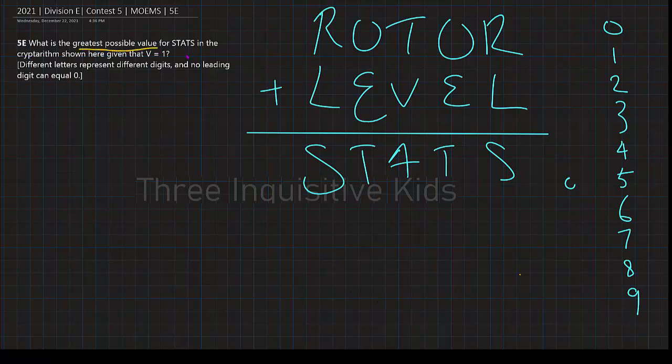What is the greatest possible value for STATS in the cryptarithm shown here given that B equals 1? Different letters represent different digits and no leading digit can equal zero. So none of these digits equal zero.